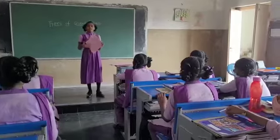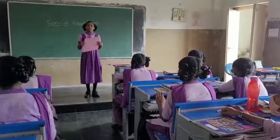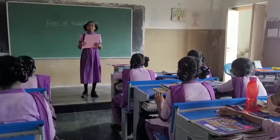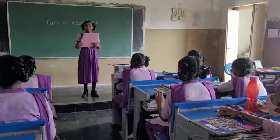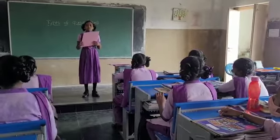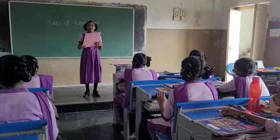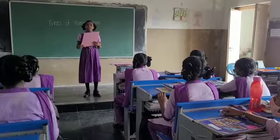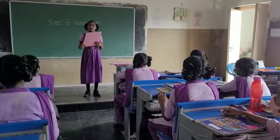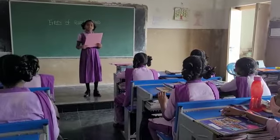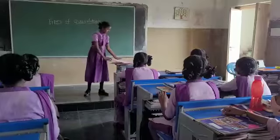Fourth one is parallelogram. One pair of opposite sides are equal. Diagonals of a parallelogram bisect each other.